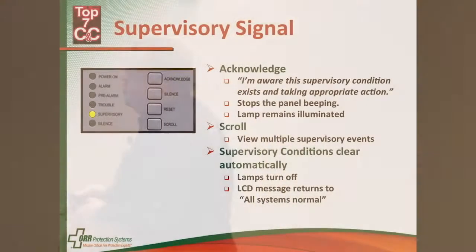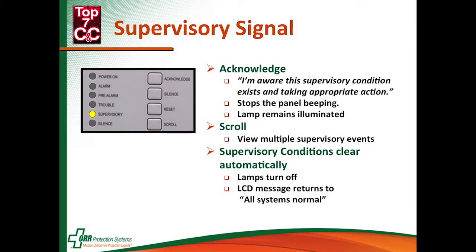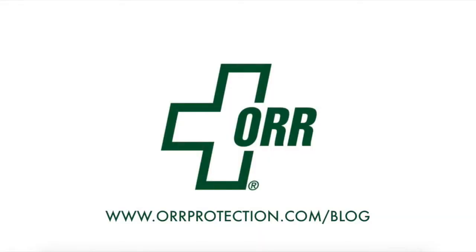The important thing is: supervisory means there's an off-normal condition with another system that the fire alarm system is watching, versus troubles, which are for the fire alarm system itself — that's the distinction. The buttons you can press: acknowledge logs that you acknowledged it, stops the panel from beeping, and resounds in 24 hours. Scroll lets you go through multiple events. And supervisories clear automatically once the offending condition is fixed.